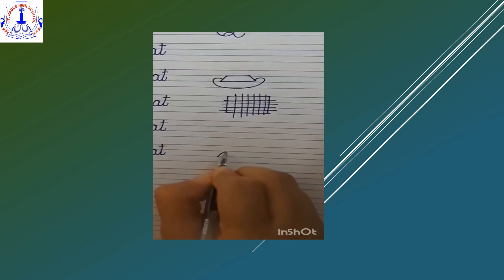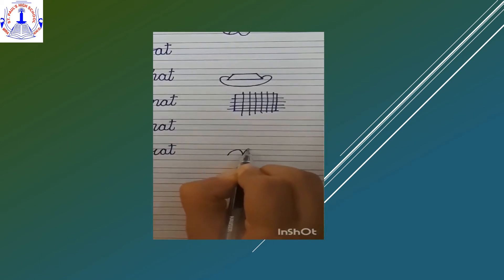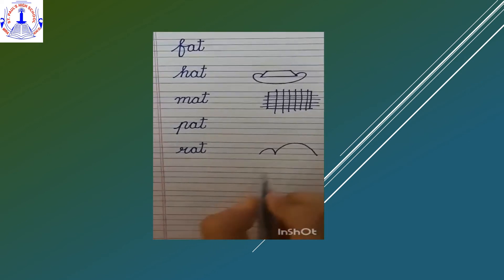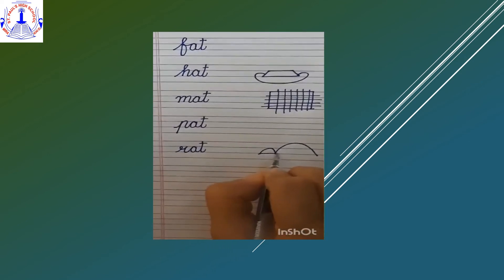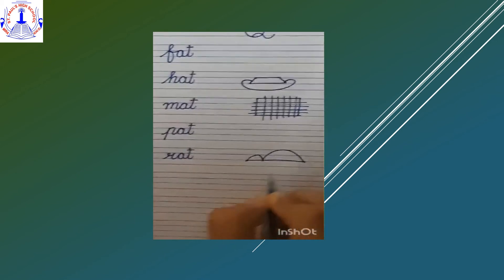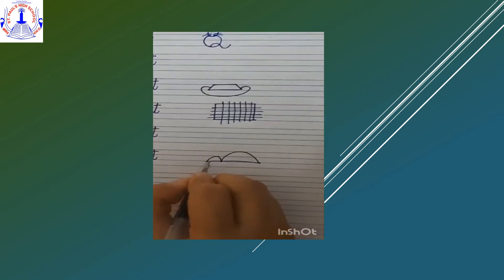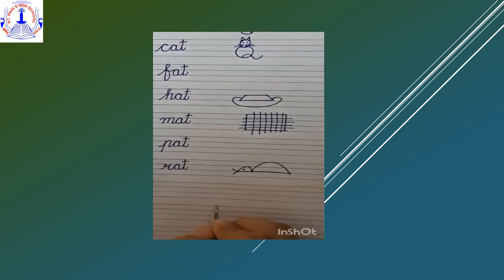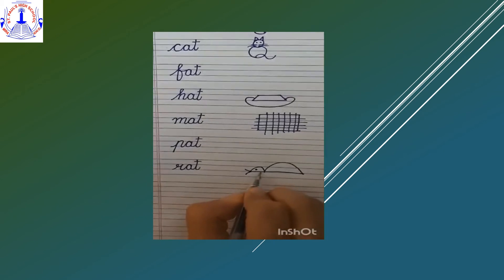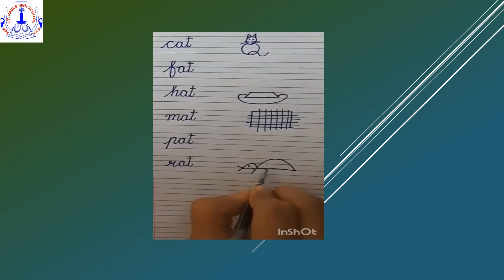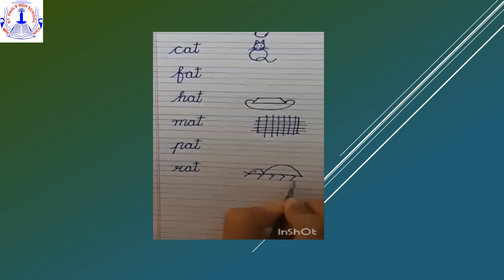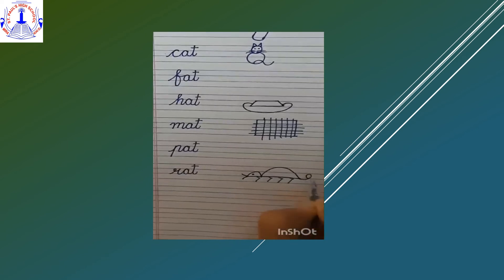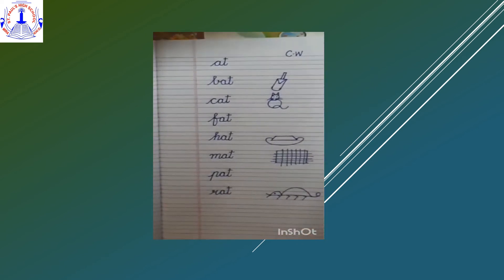Leave two finger space and draw a small semicircle, a big semicircle, and one connected sleeping line. One dot for the eye, whiskers, four legs, and one tail. R-A-T, rat.